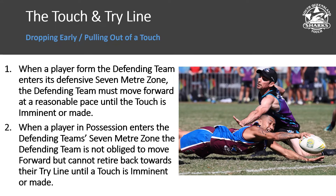The touch and the try line — dropping early and pulling out of a touch — is perhaps the most contentious rule understanding we currently have. When a player from the defending team enters its defensive seven metre zone, the defending team must move forward at a reasonable pace until the touch is imminent or made. Imminent means the touch is most likely to occur — not definitely going to occur. As soon as both the defender and attacker believe the touch is most likely going to occur, the defence may drop back.